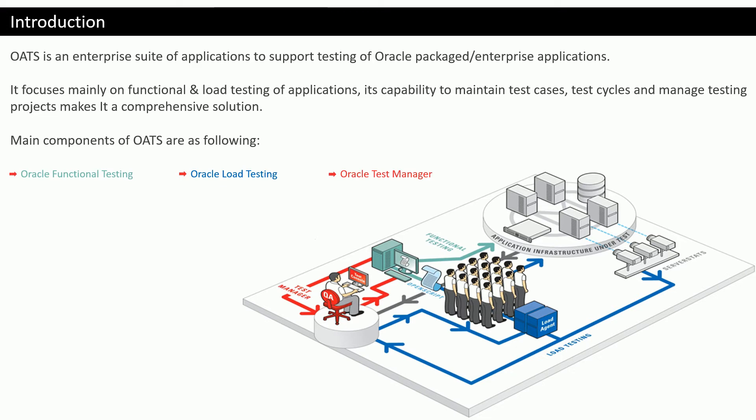Broadly, OATS is divided into three main tools: Oracle Functional Testing, Oracle Load Testing, and Oracle Test Management. These are the three main components that come together as a suite.